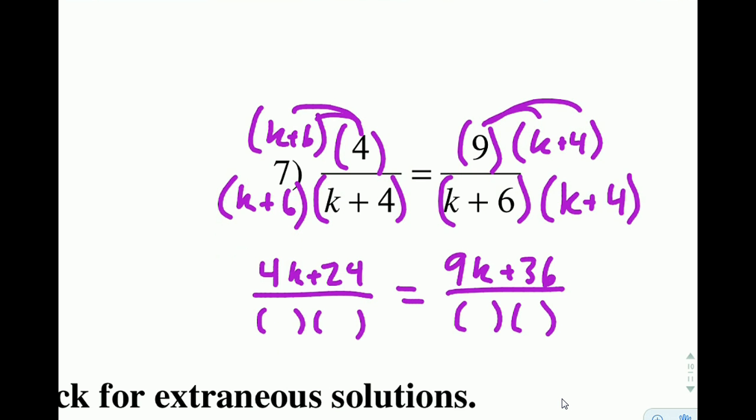And then I'm going to multiply both sides by all of that stuff because we have an equal sign. The k plus 6 times k plus 4. And that is going to end up canceling top to bottom. Leaving us with 4k plus 24 equals 9k plus 36.